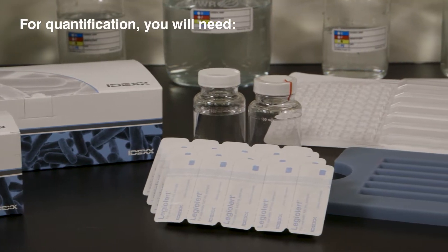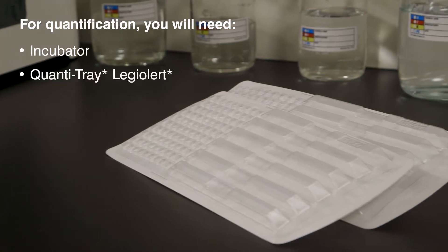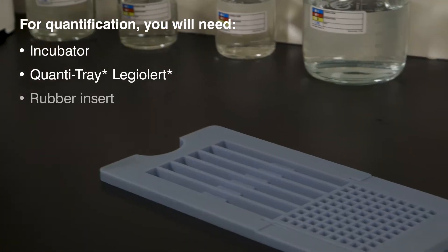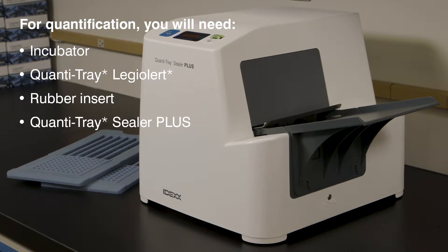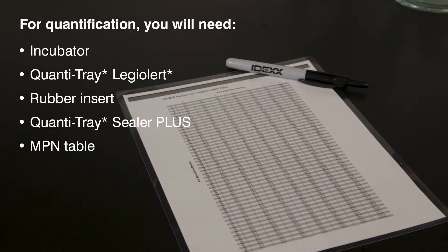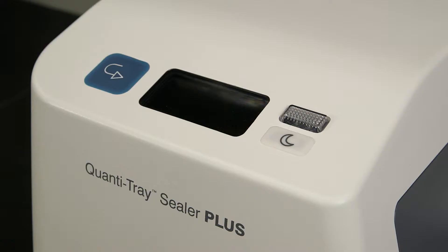For quantification, you will need an incubator, a Quantitray LEGALERT rubber insert, a Quantitray sealer plus, and the included most probable number table or the IDEX automated MPN generator program found at IDEX.com. Turn on the sealer and then wait until a green bar appears on the display. The sealer has now reached the appropriate sealing temperature.